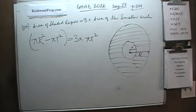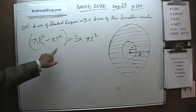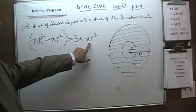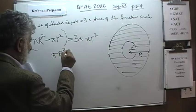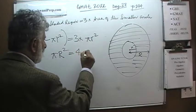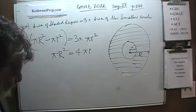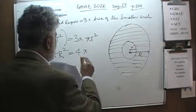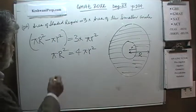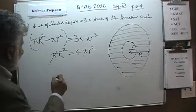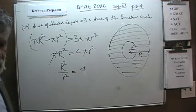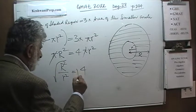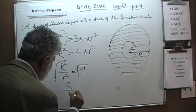Let's see where this takes us. If we bring the πr² term over, instead of 3 of them we'll end up with 4 of them. So we get πR² = 4πr². The π's drop out, and we end up with R²/r² = 4. Take the square root of both sides, and we're done. The ratio of the two radii is 2 to 1.